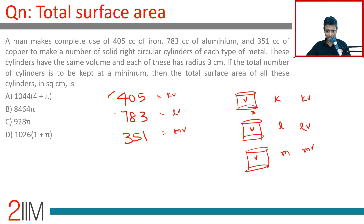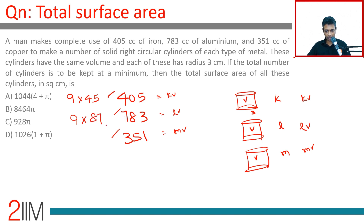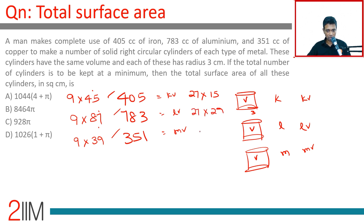Each of 405, 783, and 351 is a multiple of 9. So we can factor out 9: 405 = 9 × 45, 783 = 9 × 87, 351 = 9 × 39. Then 45, 87, and 39 are each multiples of 3, so we factor out a further 3, giving a total factor of 27. Thus 405 = 27 × 15, 783 = 27 × 29, and 351 = 27 × 13. Since 15, 29, and 13 share no common factors, the HCF is 27.